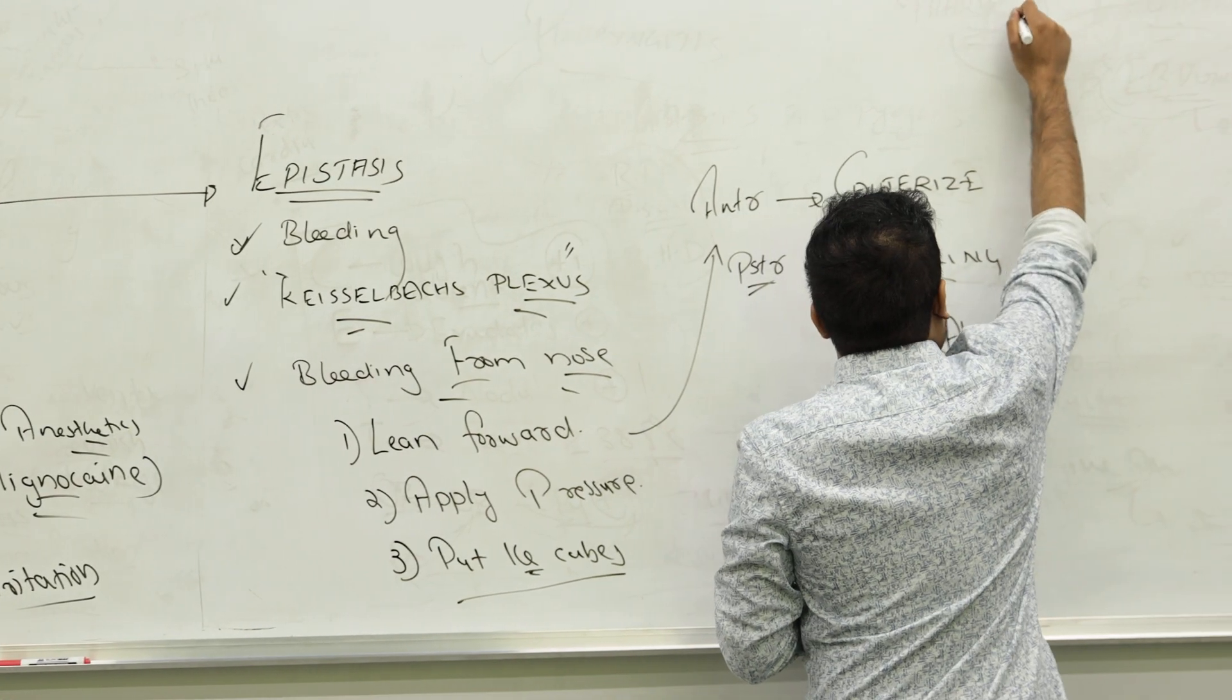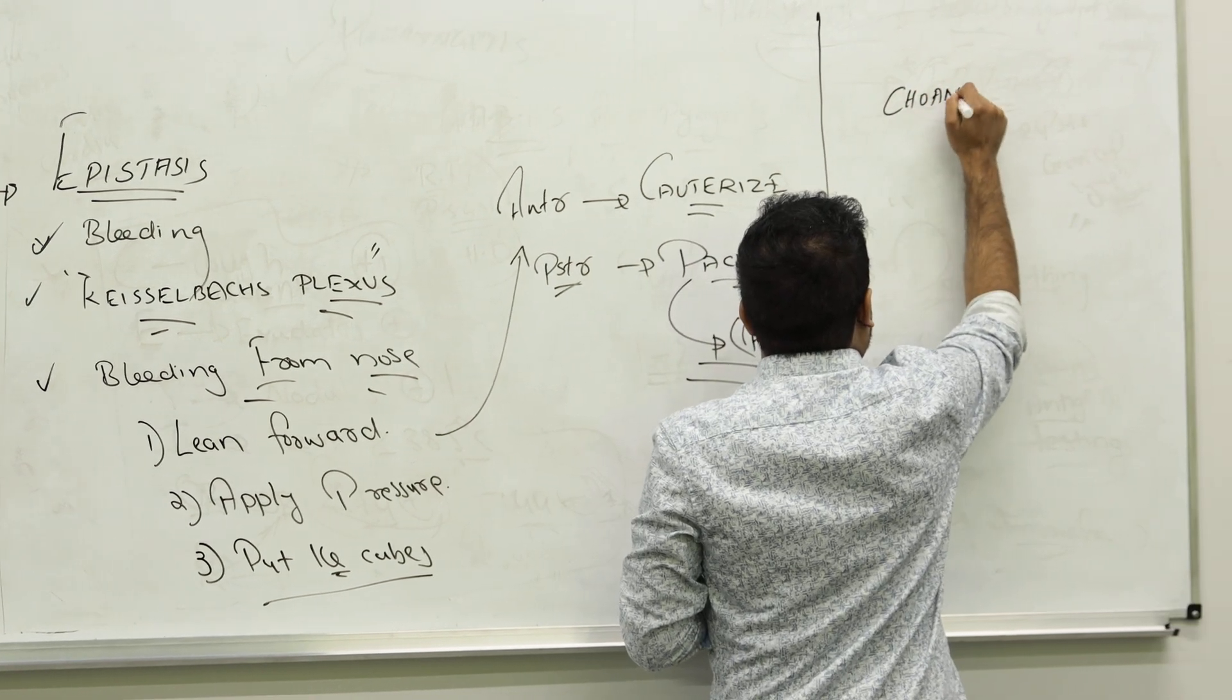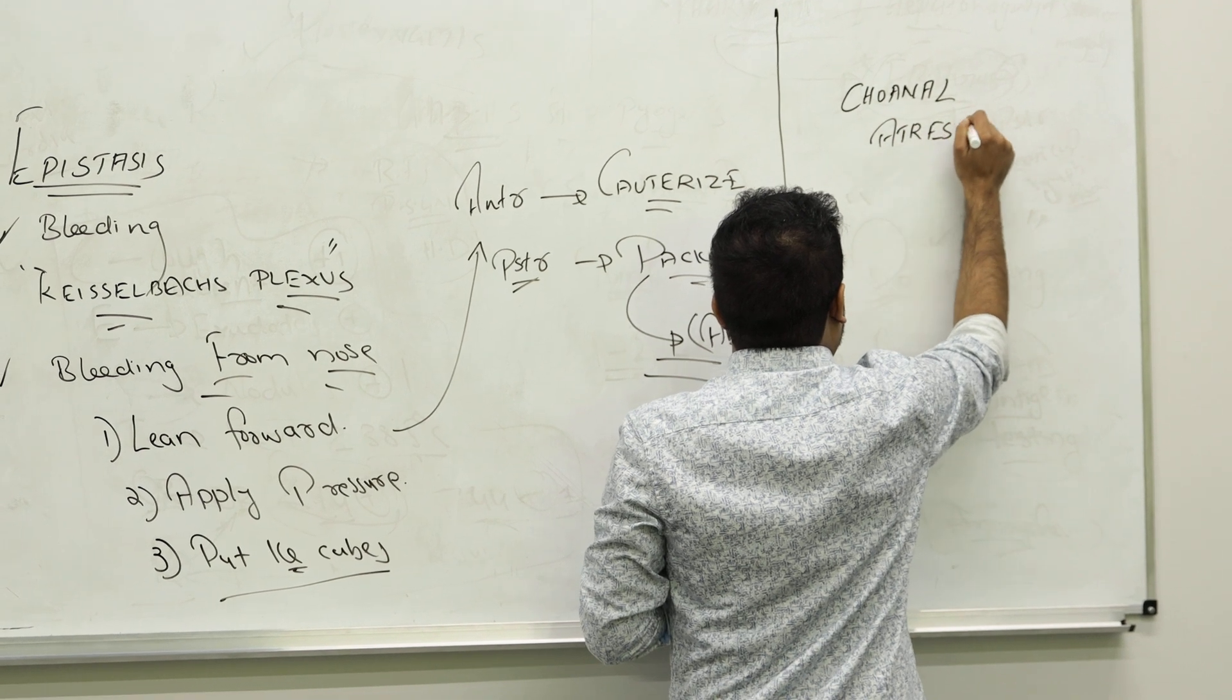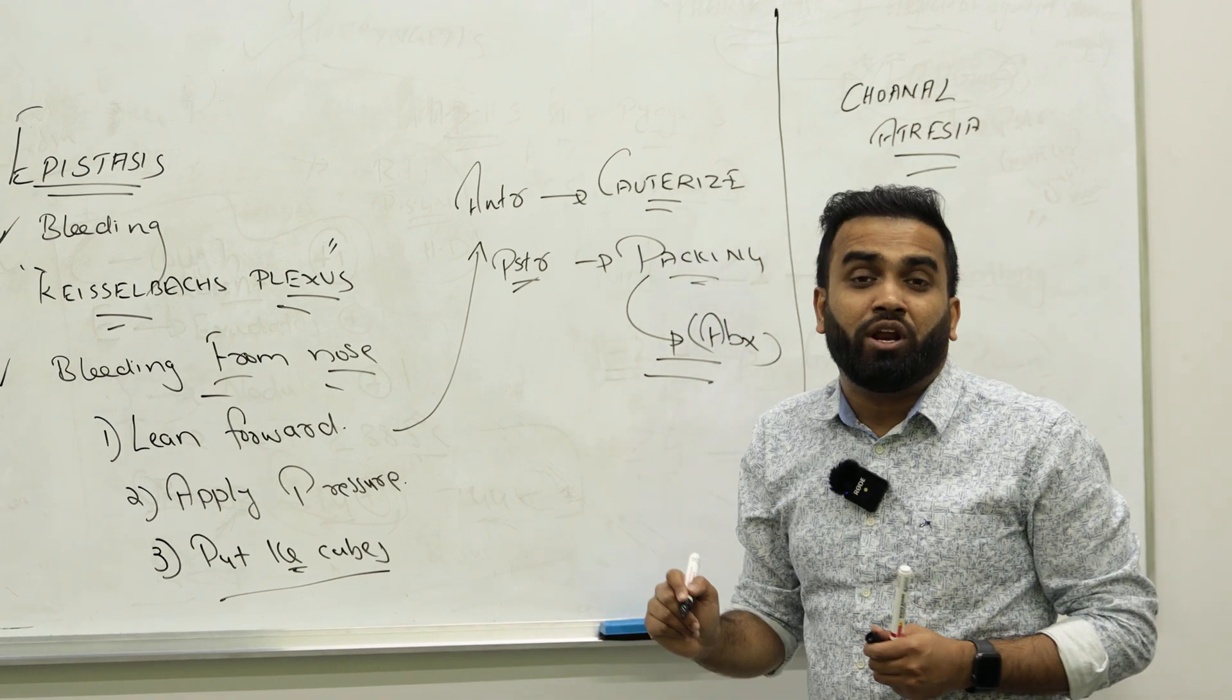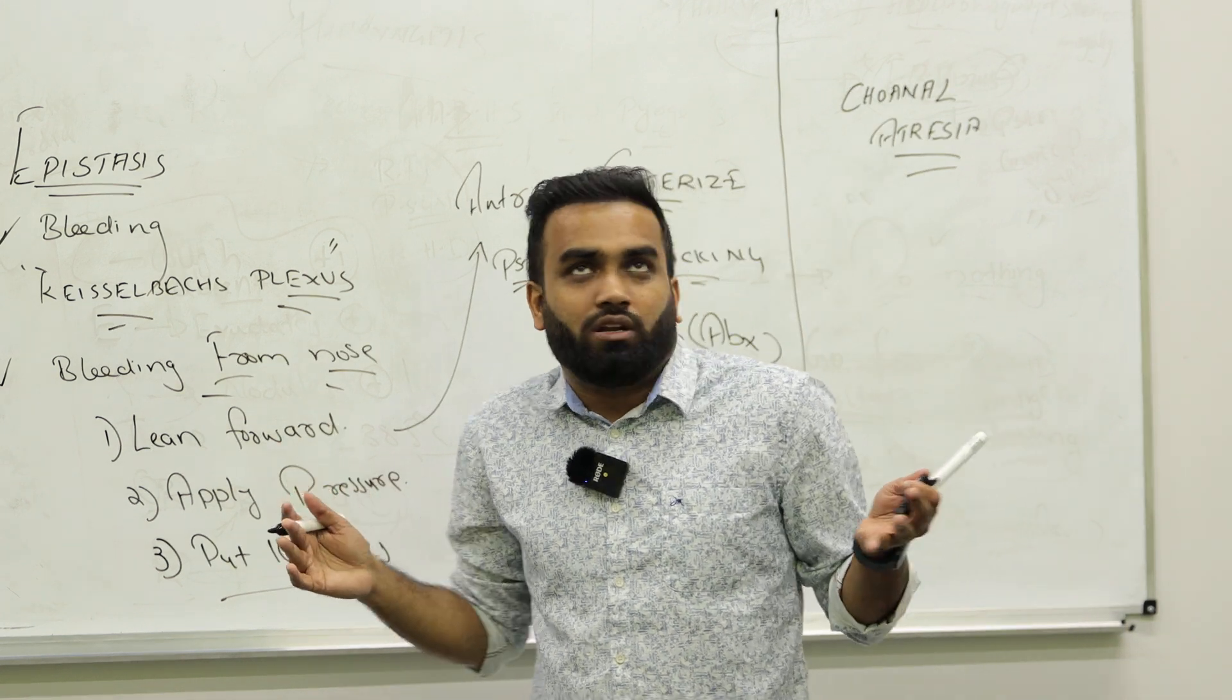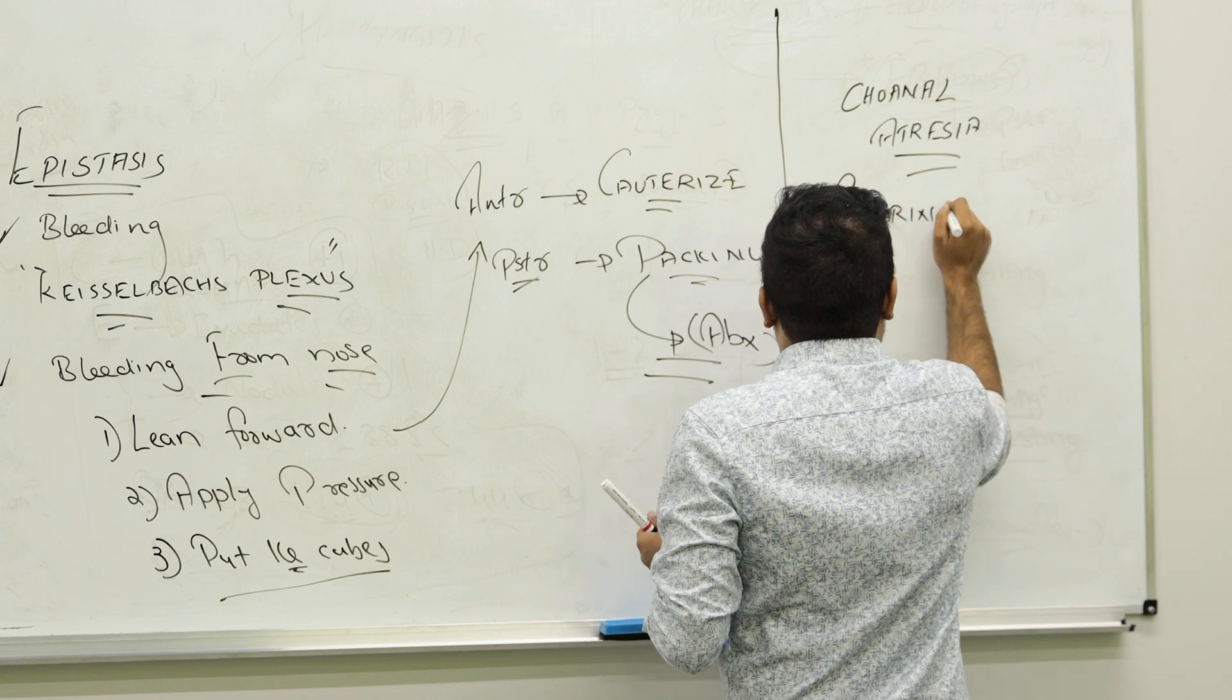Next one. There is another condition in children normally called choanal atresia. You might have heard about it. Some child will be snoring while sleeping. Severe snoring. It is not an adult even. So snoring in children. Special case. Interesting case.